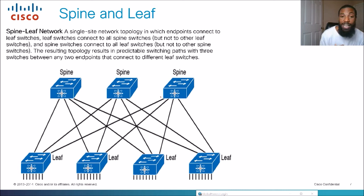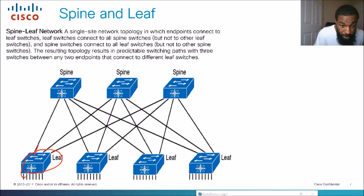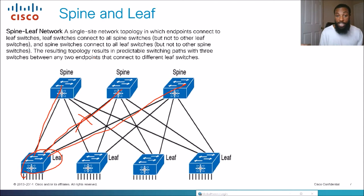The topology results in predictable switching paths with three switches between any two endpoints connected to different leaf switches. There's more redundancy here compared to the three-tier or two-tier design. For example, leaf switch one has uplinks to multiple spine switches — if one link goes down, there are still two other paths to get to the internet. It's way more redundancy, and you'll see beefier switches in this type of network topology.